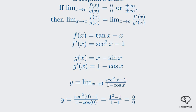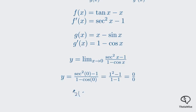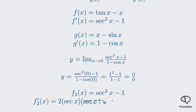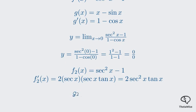Let's find the derivatives of our new numerator and denominator. For the new numerator, we need the derivative of secant squared x minus 1. This requires the chain rule. The derivative of u squared is 2u times u prime. Here, u is secant x, so u prime is secant x tan x. This gives us 2 secant squared x tan x. The derivative of 1 is 0, so our new numerator derivative is 2 secant squared x tan x. For the new denominator, we need the derivative of 1 minus cos x. The derivative of 1 is 0, and the derivative of negative cos x is positive sin x. So our new denominator derivative is sin x.